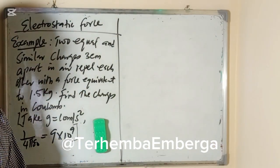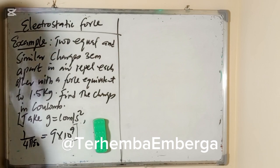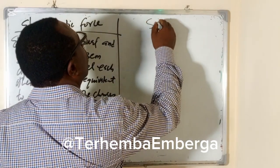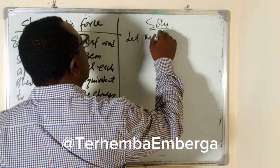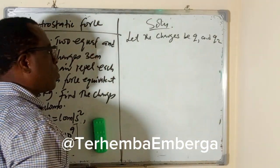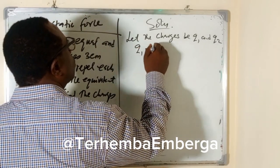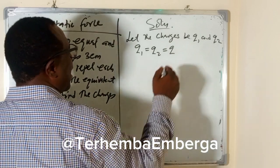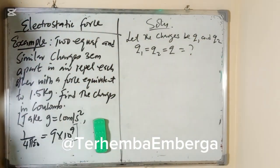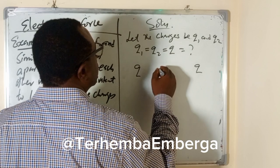You need to analyze what this problem is all about. The problem is about calculating the charges, and the question says two equal and similar charges, so they are like charges. Let the charges be Q1 and Q2, and since they are equal we can say that Q1 is equal to Q2 is equal to Q, and this is what we are looking for.